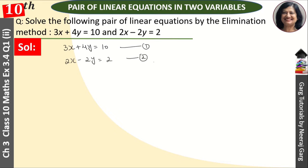We have to solve this by the elimination method. For the elimination method, we need to make the coefficients of x or y equal. We can see the coefficients of y are 4 and 2, so we multiply the second equation by 2.